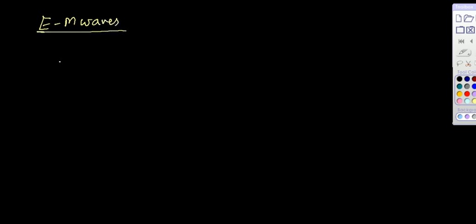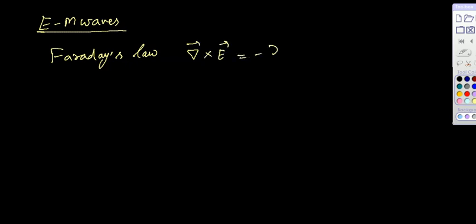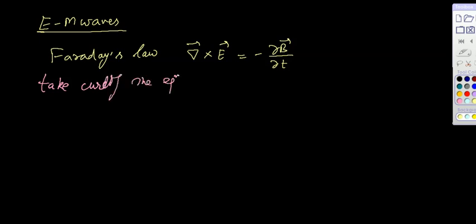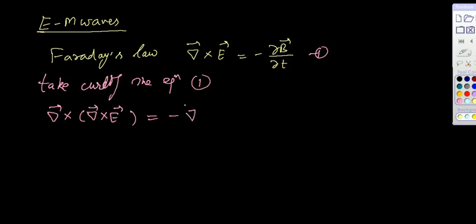First, I am using Faraday's law in differential form: del cross E is equal to minus ∂B/∂t, representing the time-varying magnetic field. Now I am taking the curl of this equation. Taking the curl of equation number one: del cross (del cross E) equals minus ∂/∂t (del cross B).